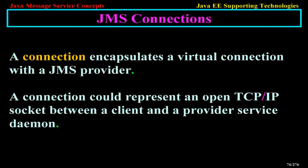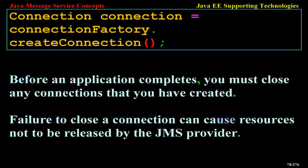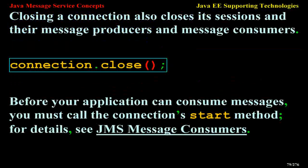JMS Connections. A connection encapsulates a virtual connection with a JMS provider — it could represent an open TCP/IP socket between a client and a provider service daemon. You use a connection to create one or more sessions. Connections implement the Connection interface. When you have a ConnectionFactory object, you can use it to create a connection: Connection connection = connectionFactory.createConnection(). Before an application completes, you must close any connections you have created. Failure to close a connection can cause resources not to be released by the JMS provider. Closing a connection also closes its sessions and their message producers and consumers.